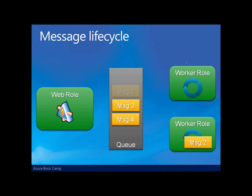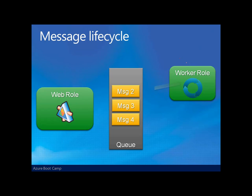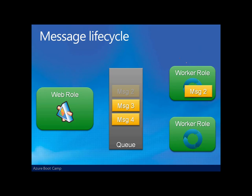We might have a second worker role also getting messages off the queue — but what should happen if that worker role goes down or has some difficulty? That second message was never physically removed from the queue, so after a certain timeout that message becomes available again. Another worker role can then request and process it. If the original worker role comes back online and tries to get or delete that message, it won't be allowed to — the queue recognizes it has timed out and that message is now being used by another worker role. Through this mechanism of getting and deleting messages, we have a fail-safe mechanism to ensure all messages are eventually consumed.